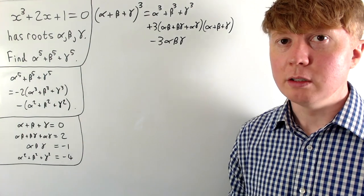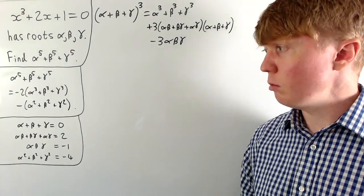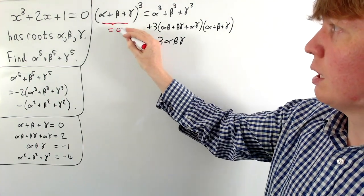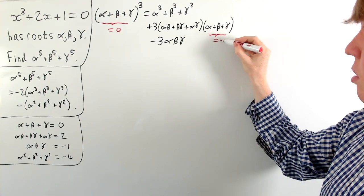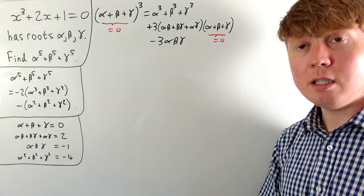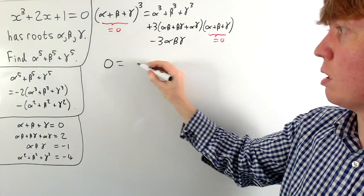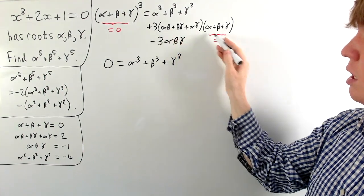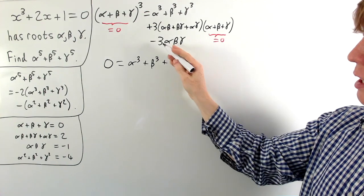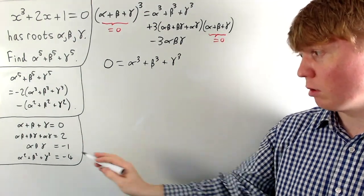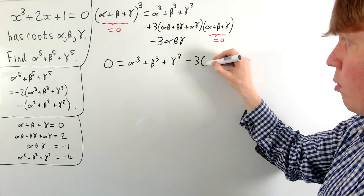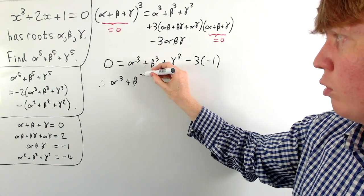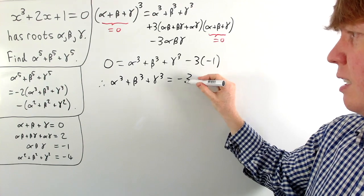Substituting known values: the sum of roots is zero, so the left side is zero, and the term with alpha plus beta plus gamma also vanishes. We get: zero equals the sum of cubes minus three times negative one, so the sum of cubes alpha cubed plus beta cubed plus gamma cubed equals negative three.